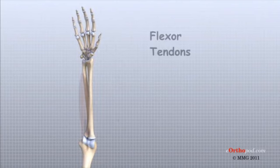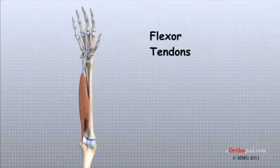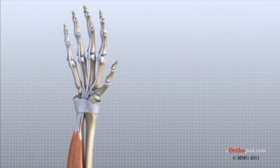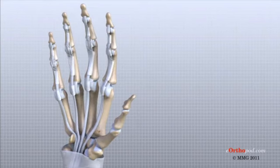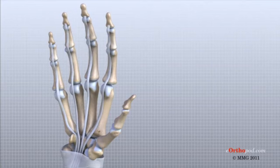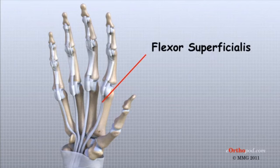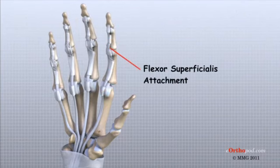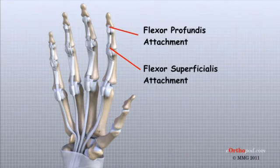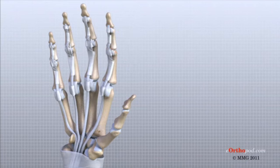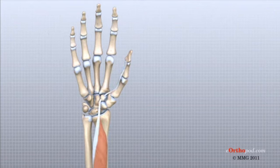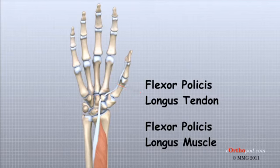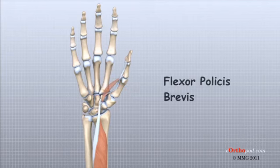The flexor tendons allow the fingers and thumb to flex or bend to grip objects in the palm of the hand. The strong flexor muscles begin in the forearm, and just before they enter the wrist, they form the flexor tendons. The flexor tendons travel through the carpal tunnel, through the palm, and two tendons each travel into the volar side of each finger. These two tendons — the flexor superficialis and flexor profundus — travel through a special tunnel formed by a series of specialized ligaments that form pulleys. The flexor superficialis connects to the base of the middle phalanx, and the flexor profundus tendon connects to the base of the distal phalanx. The thumb is different since it only has two phalanges. The flexor pollicis longus begins in the forearm and its tendon connects to the base of the distal phalanx of the thumb. The flexor pollicis brevis muscle begins in the wrist and its tendon connects to the base of the proximal phalanx of the thumb.